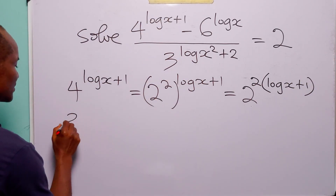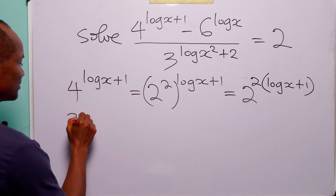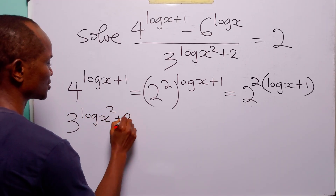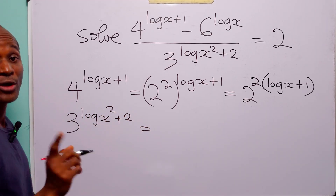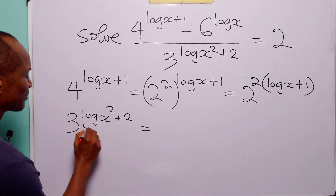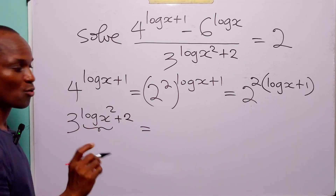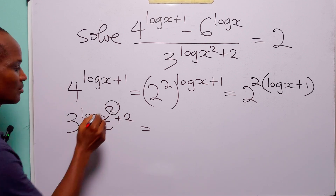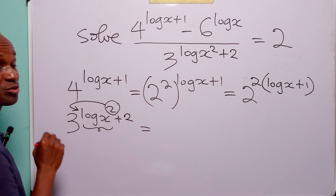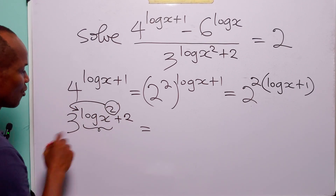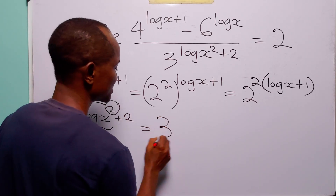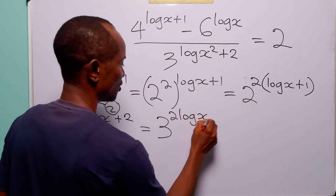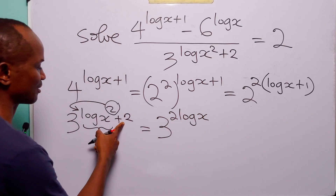Now for the second term, we have 3 to the power log x squared plus 2. We will apply the power rule to this log term — we bring down the exponent 2 to the front of the log term to become a multiplier. When we do that, this term becomes 3 to the power 2 times log x plus 2.